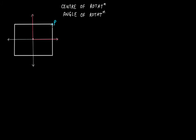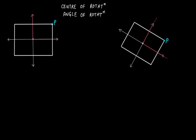We label this corner or vertex as P so that you can notice and understand the movement or rotation of this square. Imagine that we rotate this square by 45 degrees. When we rotate it by 45 degrees, the angle of rotation is 45 degrees. The new position of the square is different from the original, so at 45 degrees, we do not have rotational symmetry because the two figures are not the same.